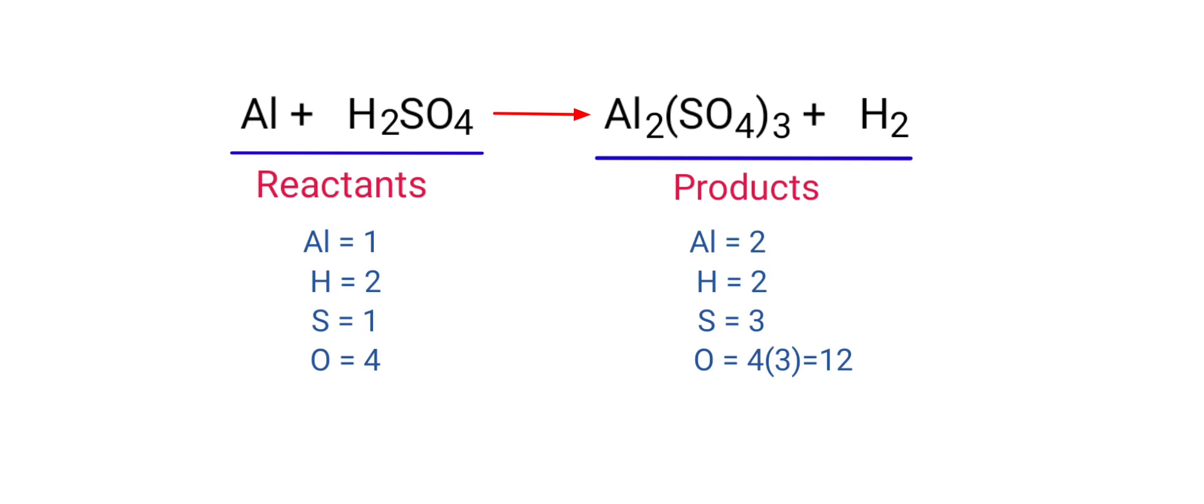If you look at this equation, the equation is not balanced. In the reactants side, there are 1 Aluminium atom, 2 Hydrogen atoms, 1 Sulphur atom, and 4 Oxygen atoms present.